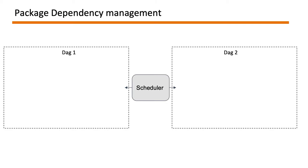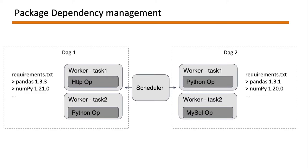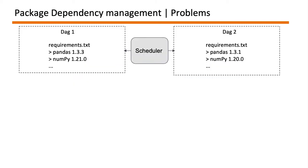Given a scenario where you have a scheduler that needs to run two DAGs, and each DAG has two tasks each using HTTP operator, Python operator, MySQL operator, or whichever operator it needs to use. Each of the tasks may require different Python packages — for example, they could have their own requirements files with pandas and numpy. Keep in mind that the Airflow workers use the same Airflow image used in the scheduler, no matter which executor you are using — local executor, Celery executor, or even a Kubernetes executor.